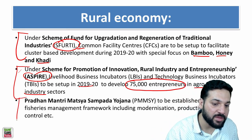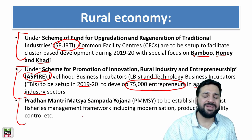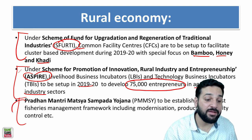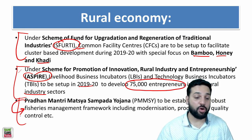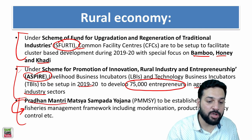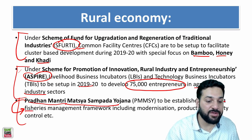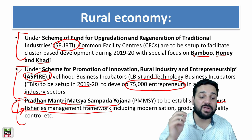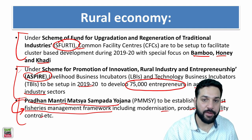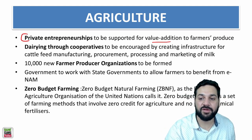Pradhan Mantri Matsya Sampada Yojana is to be established for fishermen. Please remember this scheme is for the fishermen. Its purpose is to establish a robust fisheries management framework, including modernization, productivity, quality, and control.